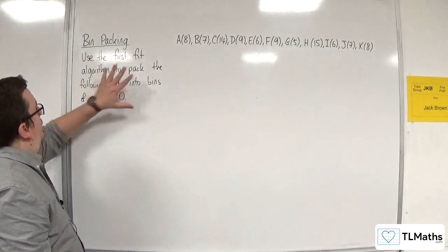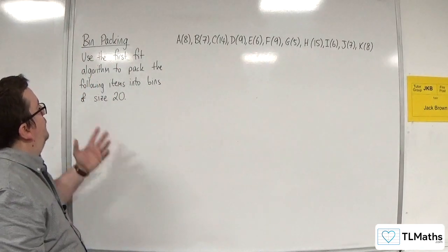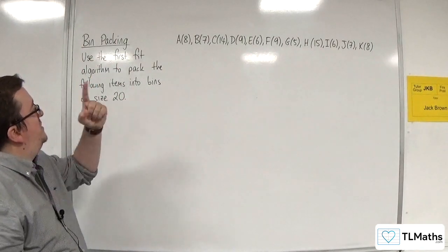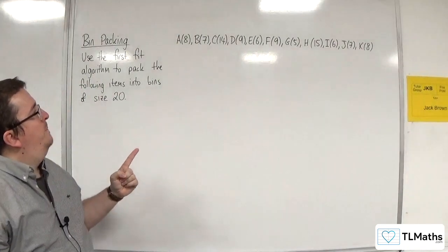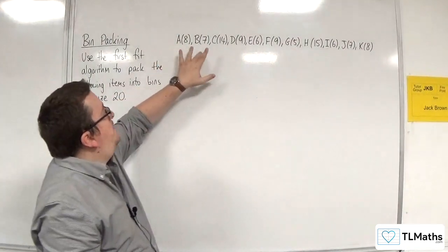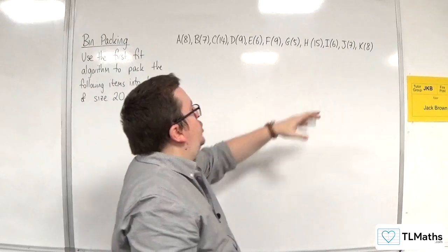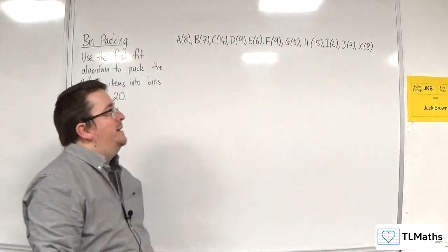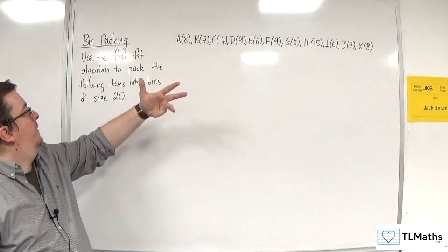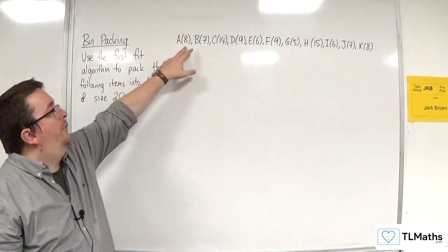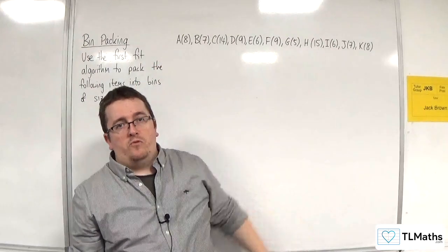We're going to use the FirstFit algorithm to pack the following items into bins of size 20. So we've got A, B, C, D, E, F, G, H, I, J, and K, and their length or size is given in brackets.